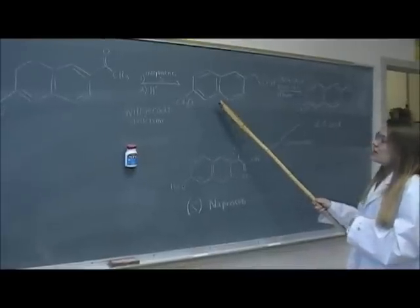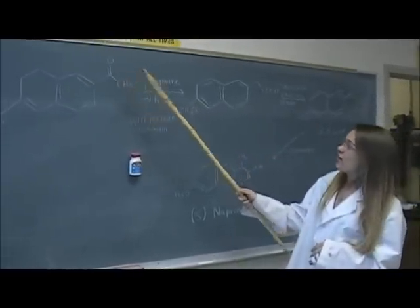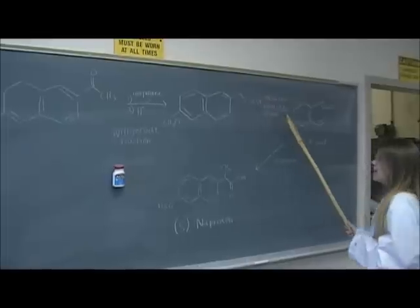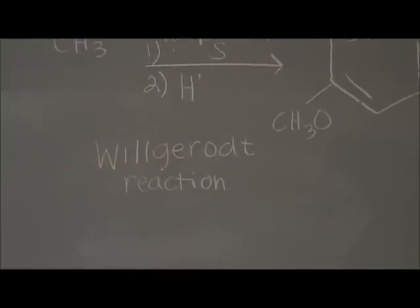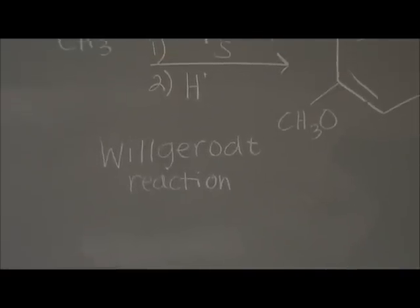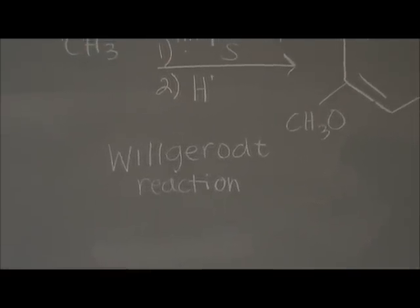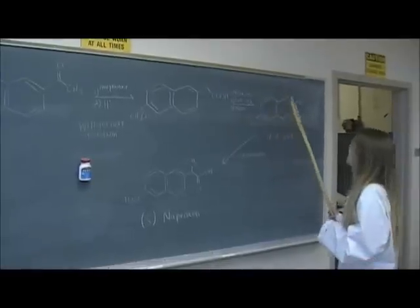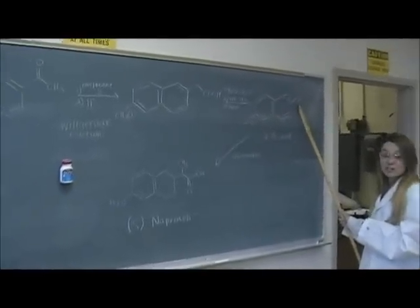Starting here, we can see that the ketone is rearranged to become a carboxylic acid. Then, in the second step of the Willgerodt reaction, we can see that a methyl group is added on to become a chiral stereocenter.